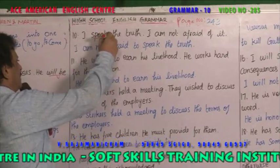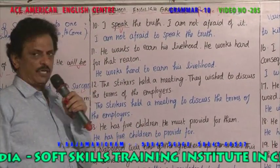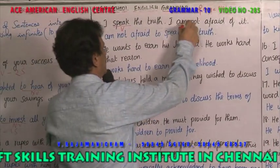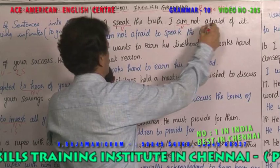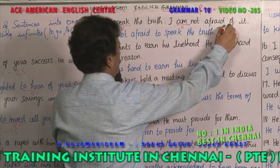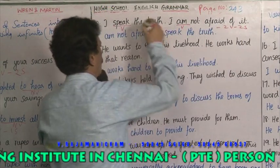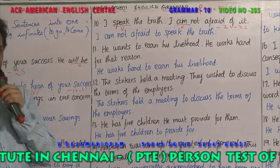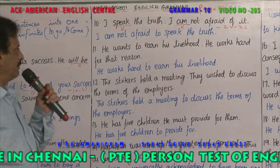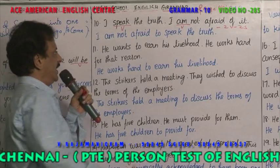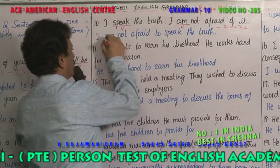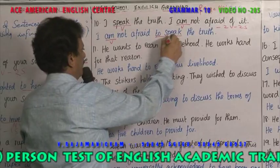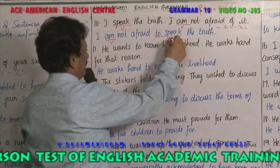Example 5: 'I speak the truth' — 'speak' is the verb. 'I am not afraid of it' — 'am' is the verb. Two verbs, two sentences. Combined: 'I am not afraid to speak the truth.' 'Am' is the verb; 'to speak' is an infinitive, not a verb. One verb, one sentence.